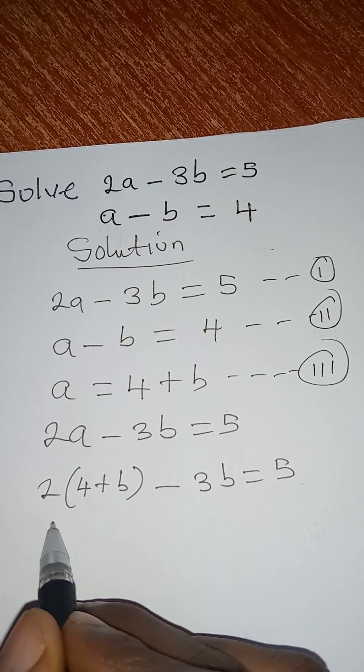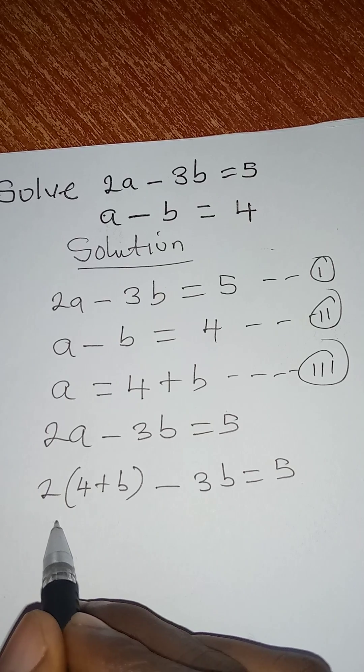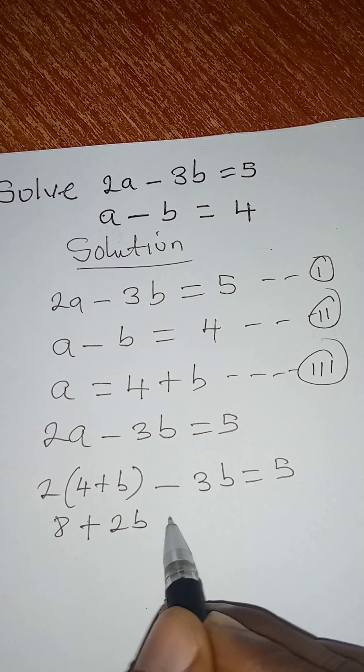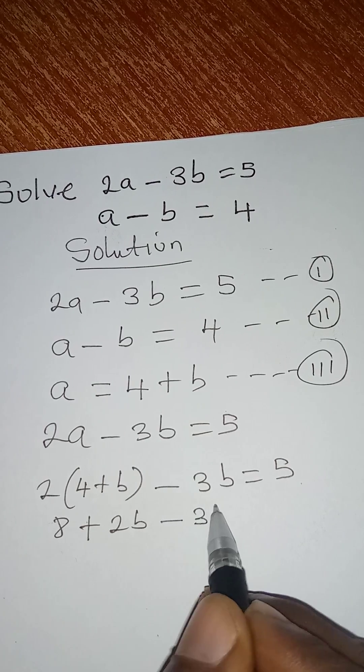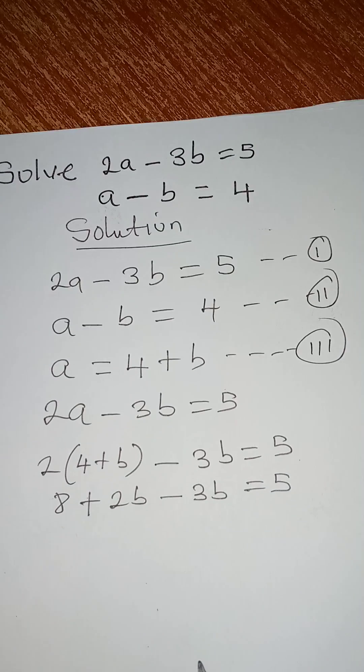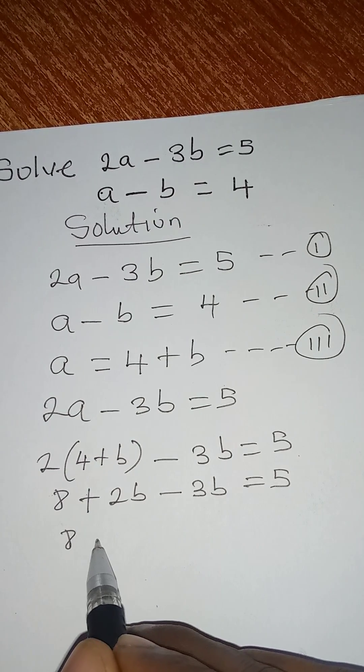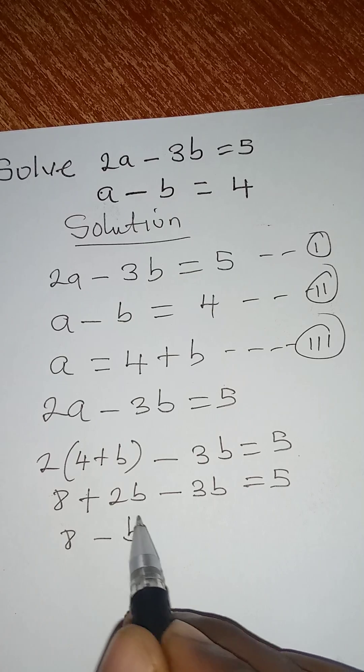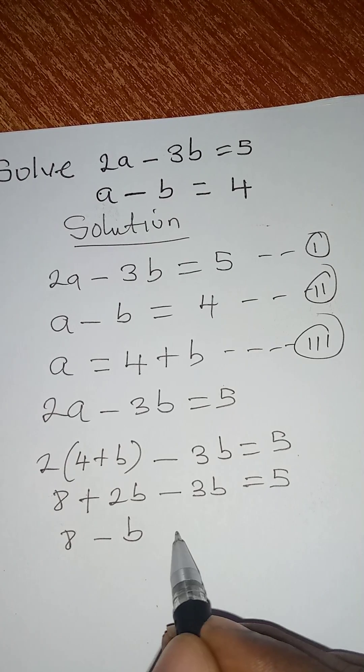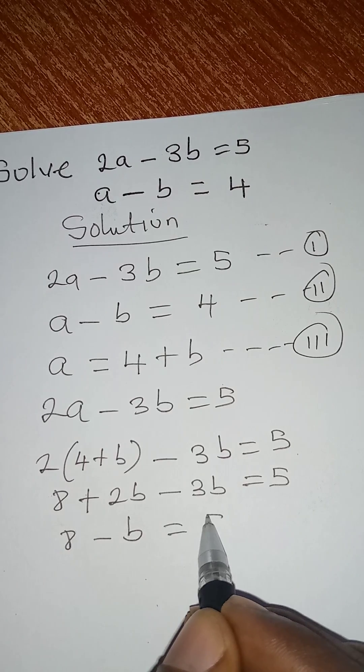If I open the brackets then I have 2 times 4 which is 8 plus 2 times b which is 2b then minus 3b then equal to 5. If I take a step further I will have 8 minus b because 2b minus 3b is minus b and this will be equal to 5.